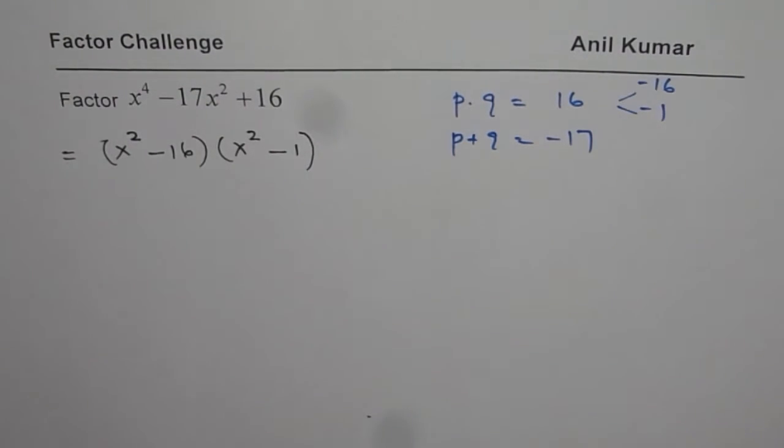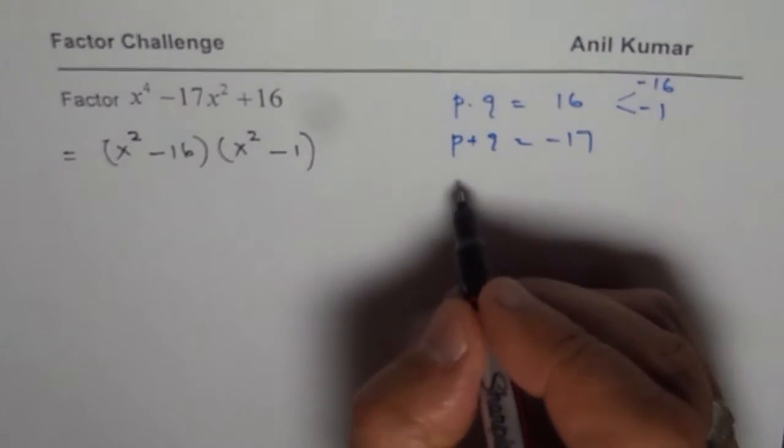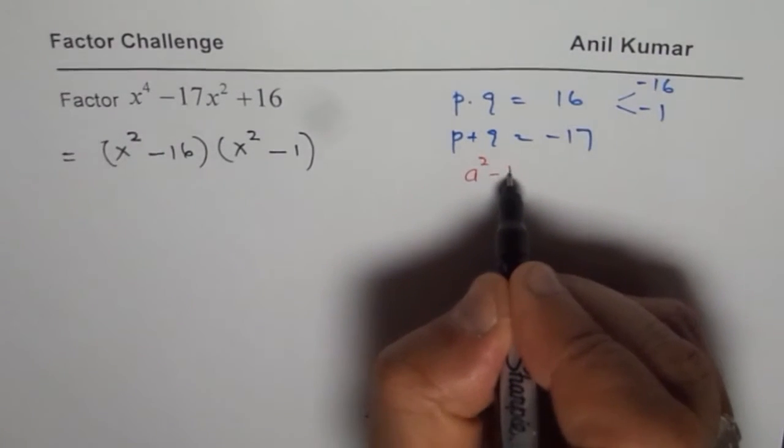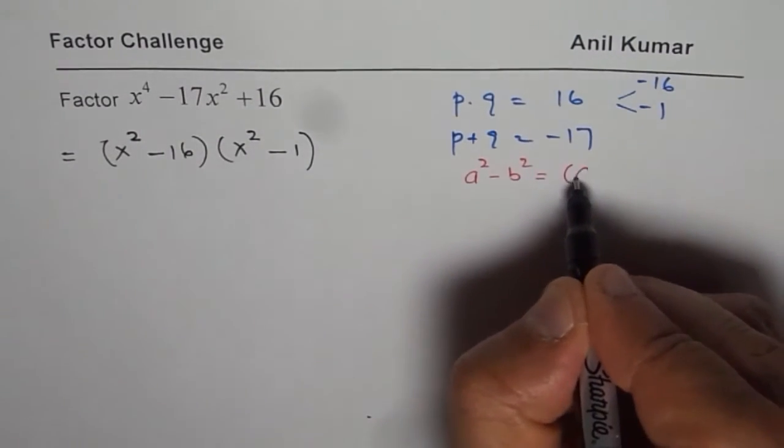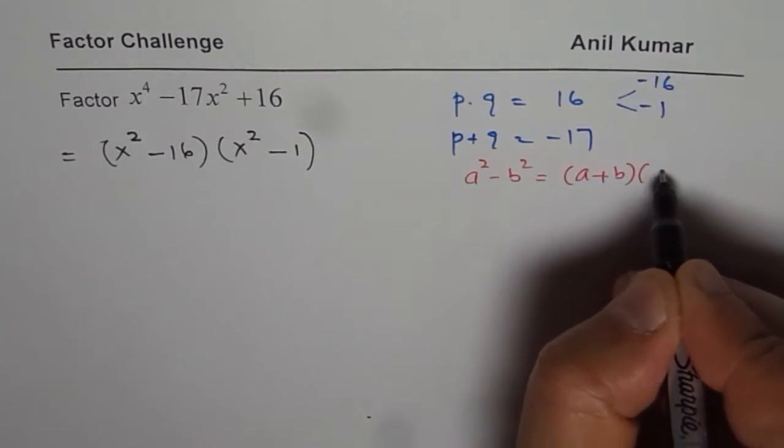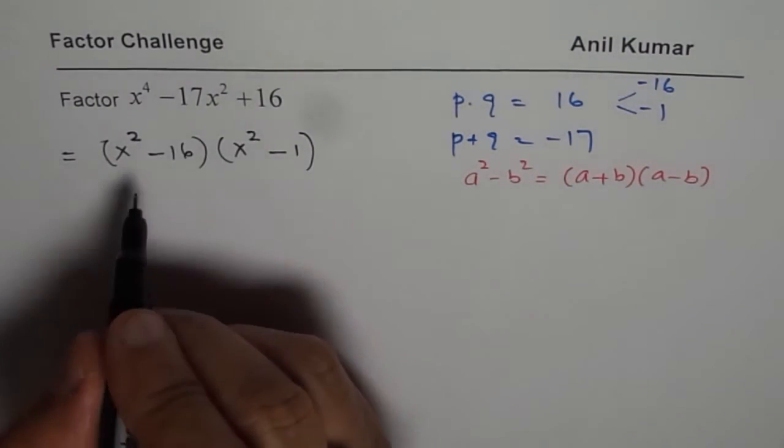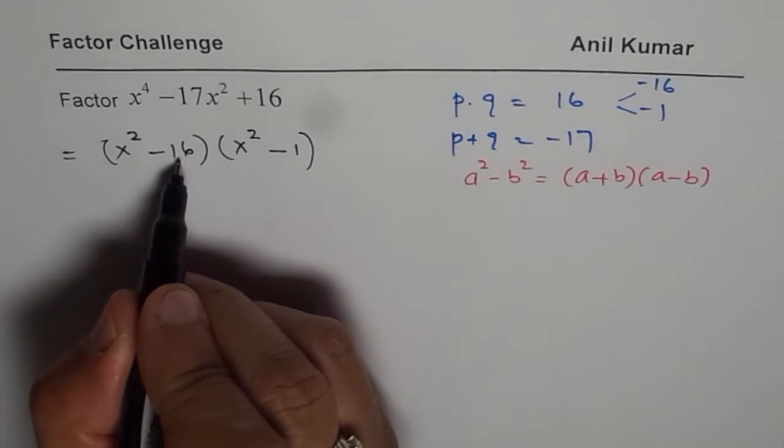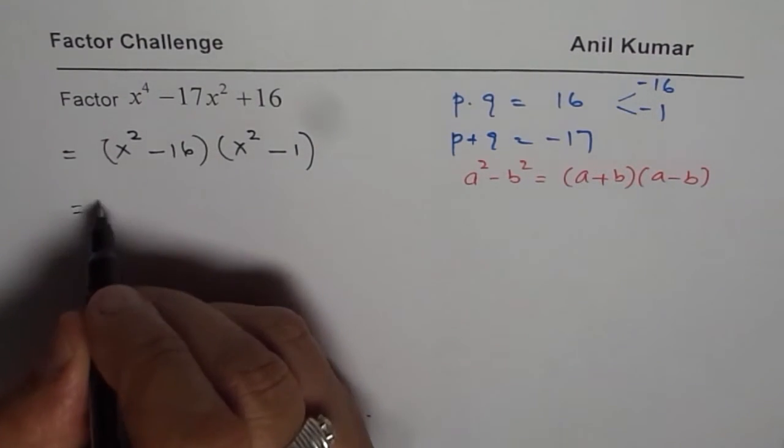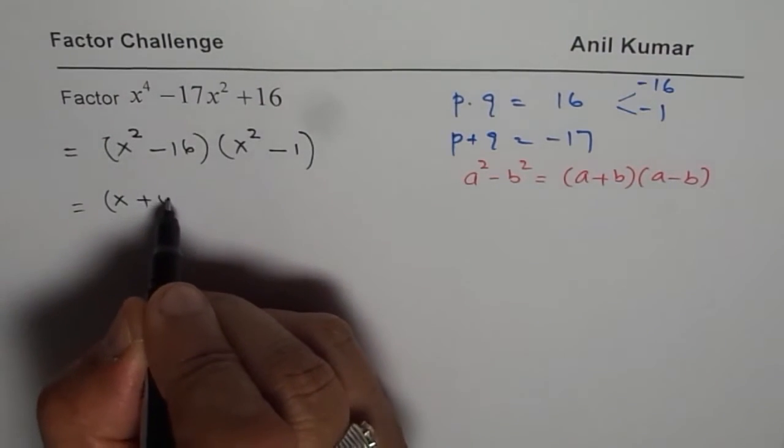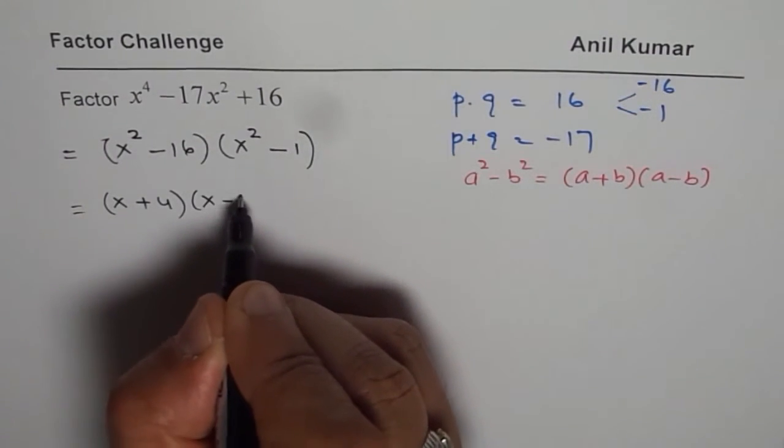Now we can apply difference of squares. You remember difference of squares, a squared minus b squared is a plus b times a minus b. So let's apply difference of squares, a is x squared and b in this case is 4, 4 squared is 16. So we will write this as x plus 4 times x minus 4.